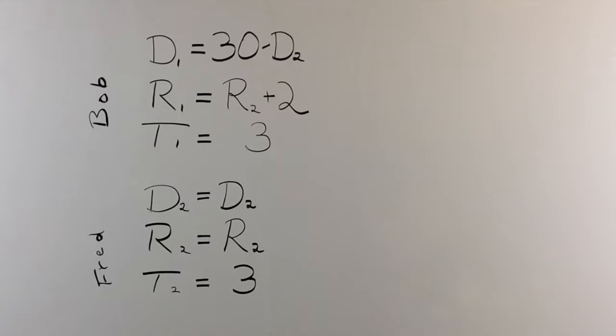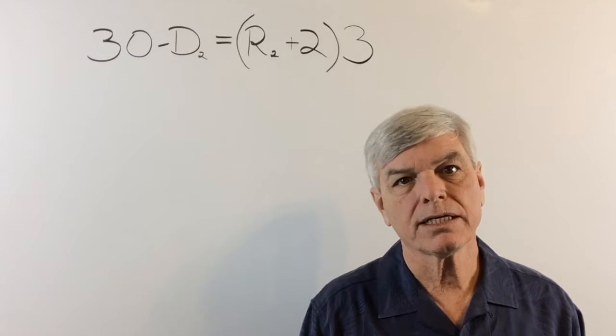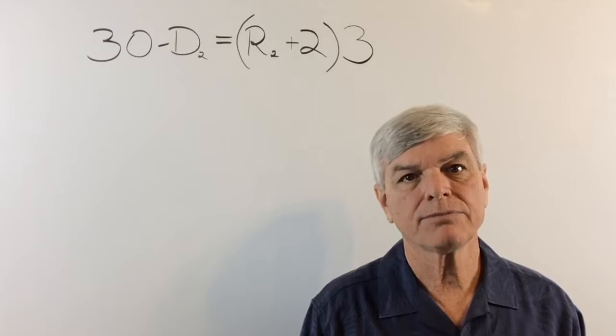D1 equals R1 times T1. You already know that. D1 is 30 minus D2. And that's going to equal R2 plus 2 times 3. Now since we're multiplying 3 times R1, that is R2 plus 2, let's put that in parentheses. So there you go. There's our first formula for our first object in motion.